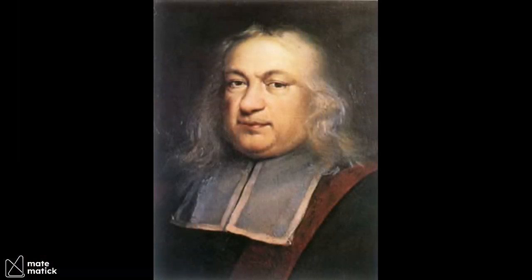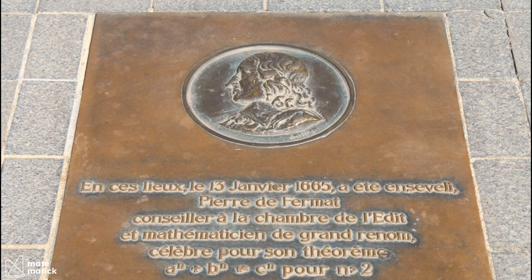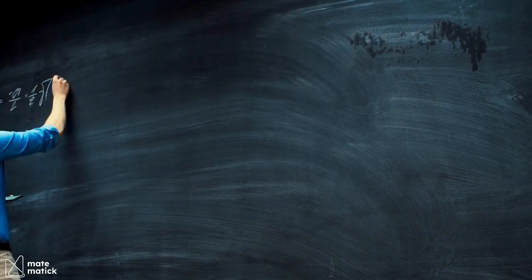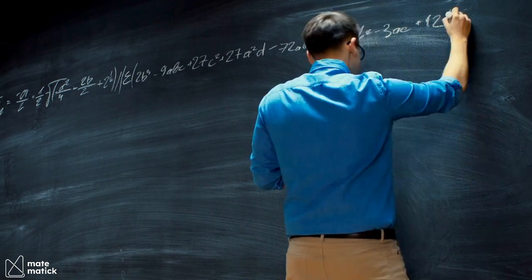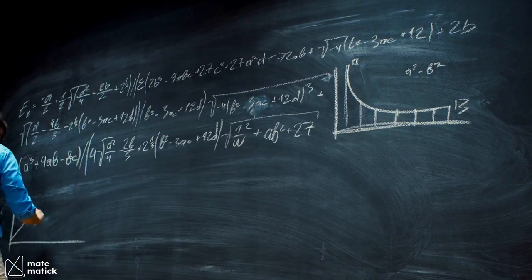Pierre de Fermat passed away in Castres, France, on January 12, 1665. His contributions to mathematics continue to inspire and captivate mathematicians and enthusiasts alike, solidifying his place as one of the most influential mathematicians in history.